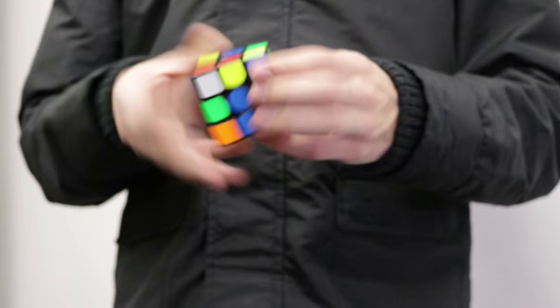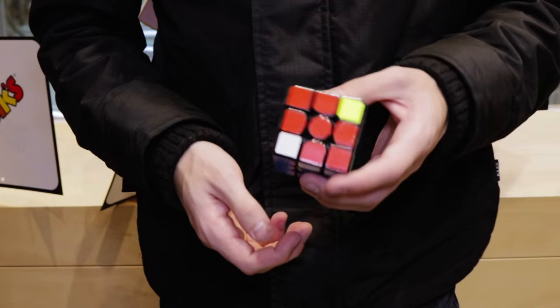For example, if you have a scrambled cube and you want to solve the white side first, but actually the red side is a lot easier to solve, you're better off solving on the red side as opposed to just restricting yourself to the white side. So this is called color neutrality, and basically the ability to start your solve for any of the six sides, not just one side.